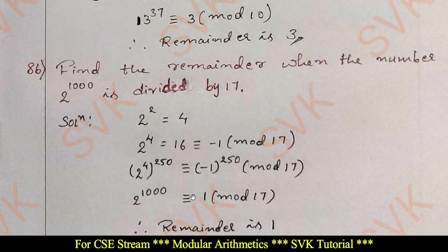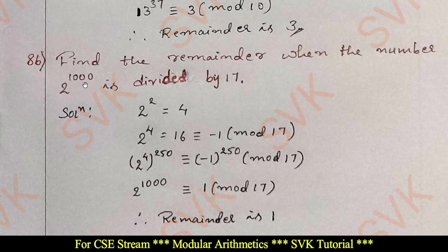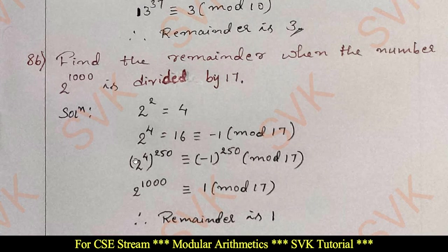Moving on to question number 8b: find the remainder when 2^1000 is divided by 17. We have 2^4 = 16 ≡ −1 (mod 17), since 16 + 1 = 17 is divisible by 17. Raising both sides to the power 250: (2^4)^250 ≡ (−1)^250 (mod 17). Since 4 × 250 = 1000, we get 2^1000 ≡ 1 (mod 17). Therefore the remainder is 1.